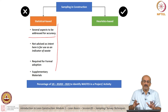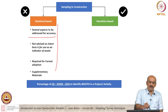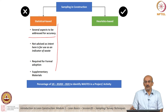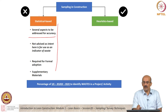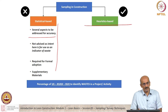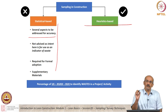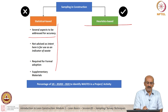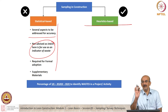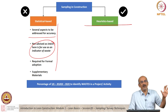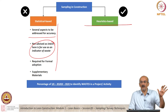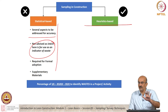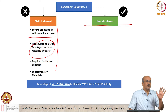A lot of times, while statistical-based sampling is scientifically relevant, what people have found is that a more heuristic-based approach is okay for construction. Number two, we are not trying to get a high degree of accuracy from our sampling in construction. We are using it as an indicator of waste — we are not trying to make payment decisions or measurements based on work sampling. It is only an indicator of waste.